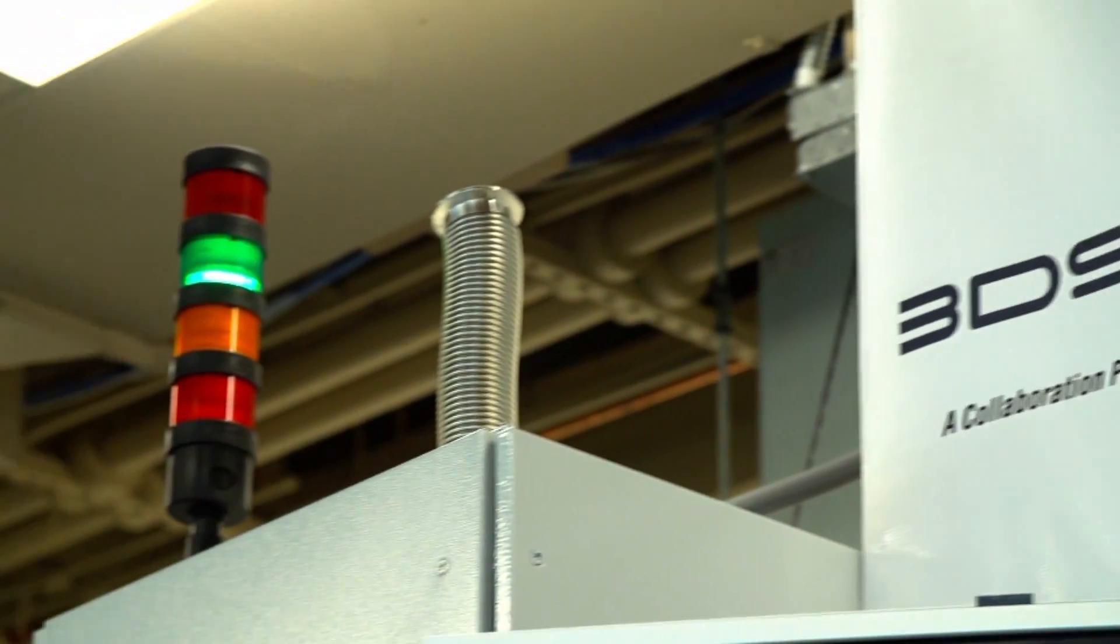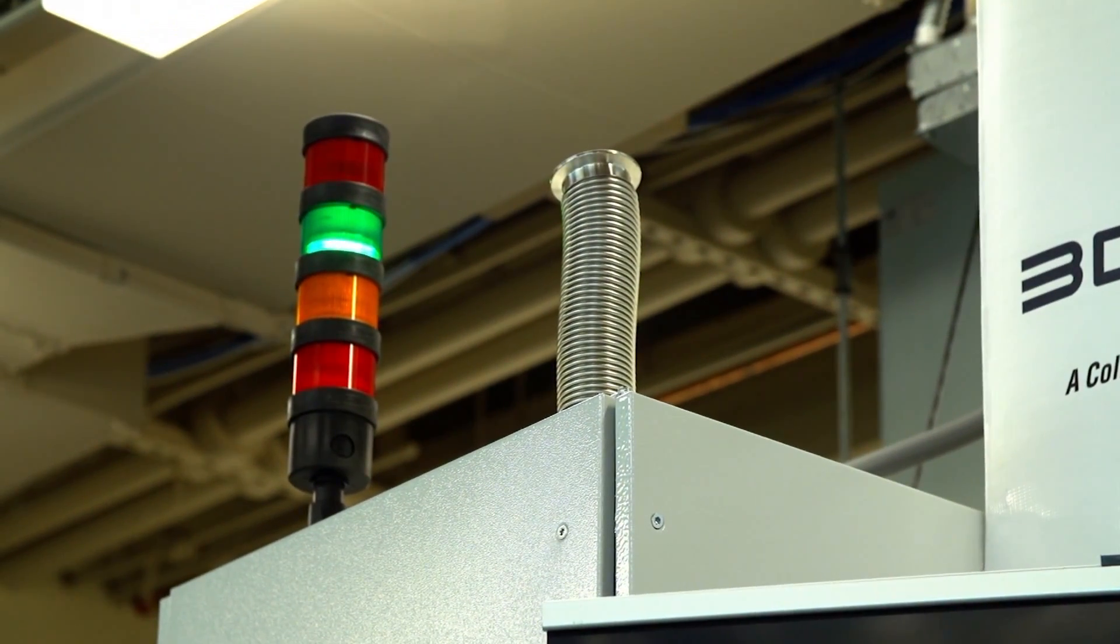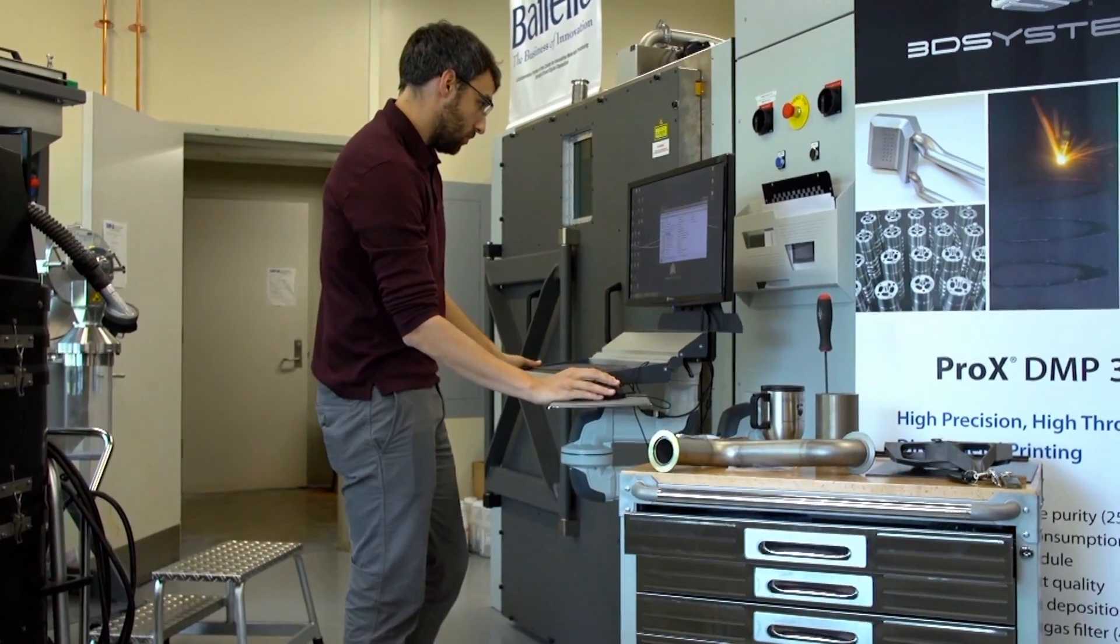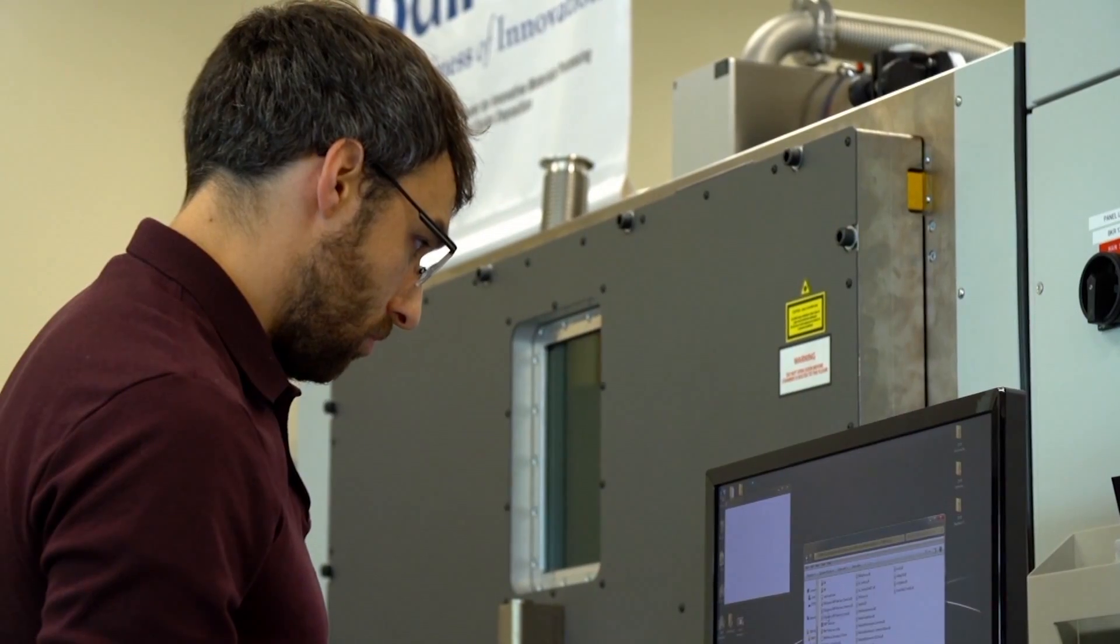Additive manufacturing is the industry term for what you probably know as 3D printing—machines that use polymers or metal to build something one layer at a time.